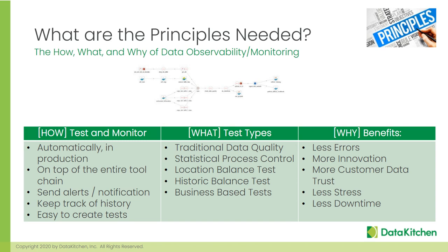Being able to check your data in production — grabbing bits of data at all points of the process on top of your entire tool chain, sending alerts and keeping track of history — is important because you're running a factory whether you believe it or not. An attribute of a good factory is statistical process control: looking at changes over time in your control points to see if things are out of compliance. You should make checks that look exactly the way your business user looks at it, comparing against their business heuristics before they get the data. If you do all that work, you end up with much less errors in production, more time to innovate, and more customer data trust.